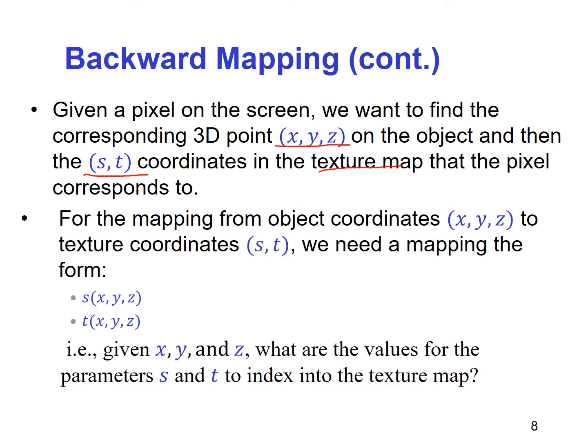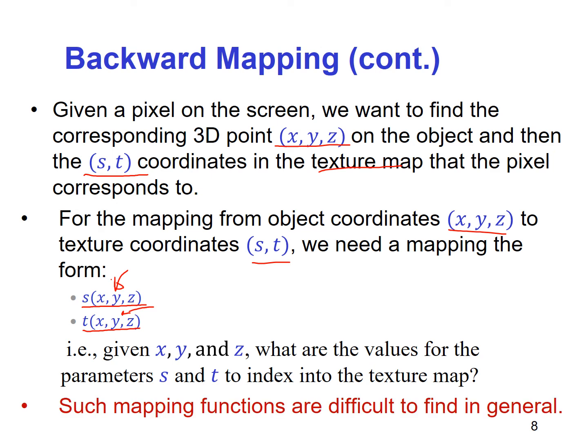For the mapping from object coordinates (X, Y, Z) to texture coordinates (S, T), we need a mapping of the form S(X, Y, Z) and T(X, Y, Z). That is, given X, Y, and Z, what are the values for the parameters S and T to index into the texture map? Such mapping functions are difficult to find in general.